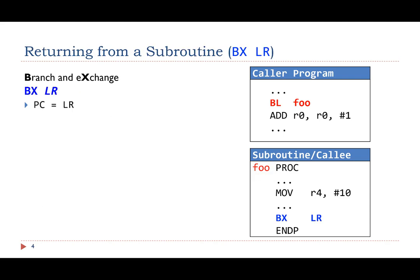In a subroutine, we can use the branch and exchange instruction BX to exit from this subroutine and return to the caller. The instruction BX LR branches to the address stored in the link register LR. Specifically, it copies the value of the LR to PC.